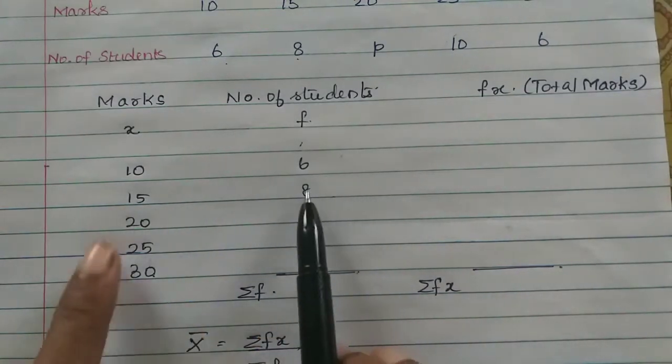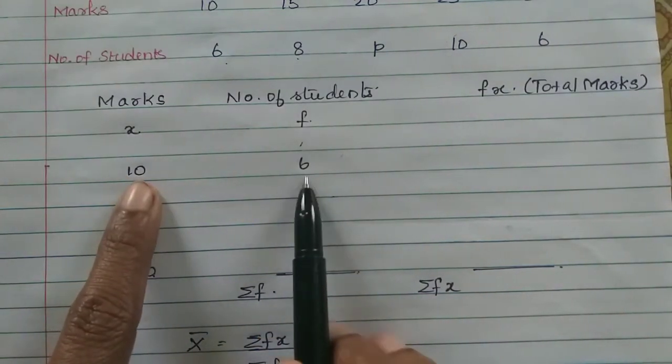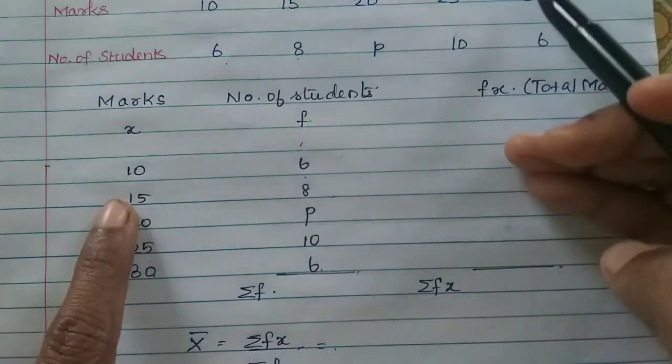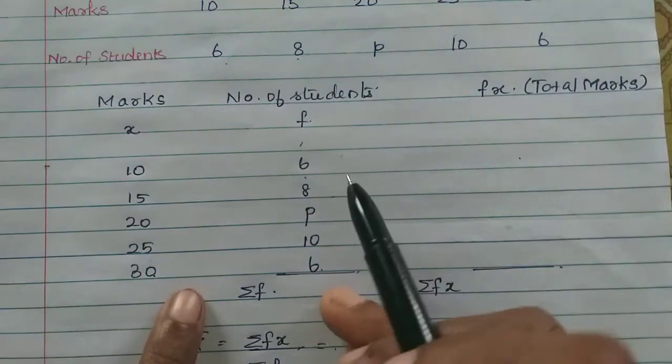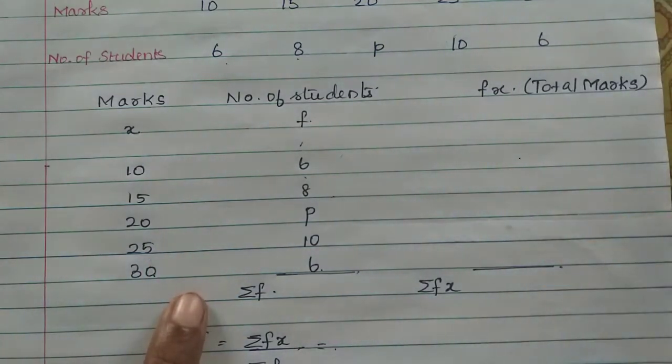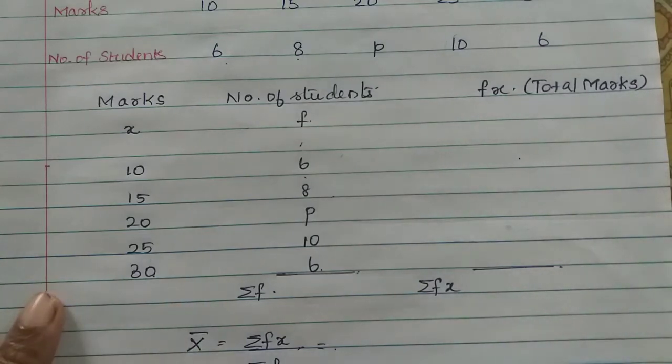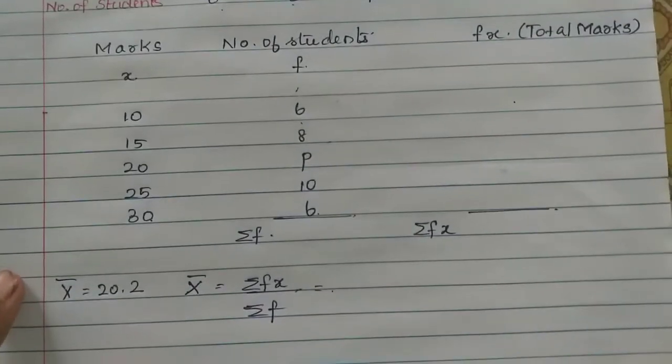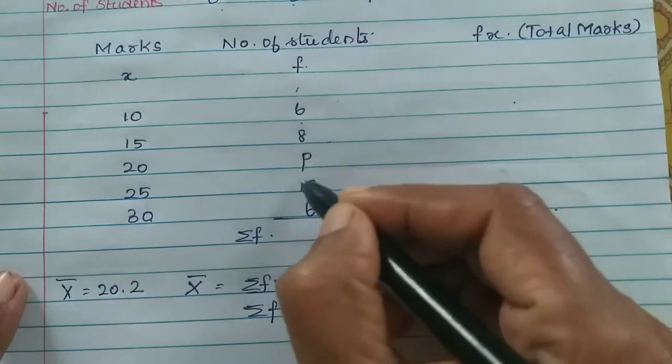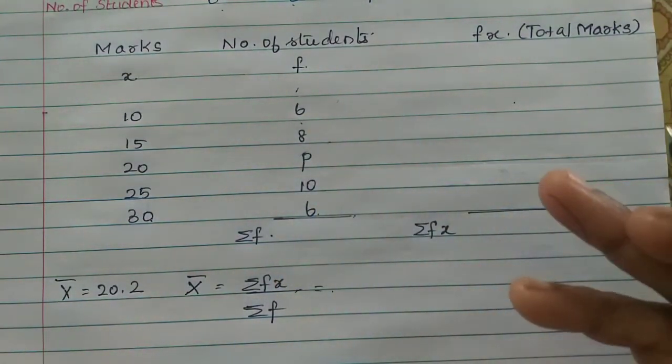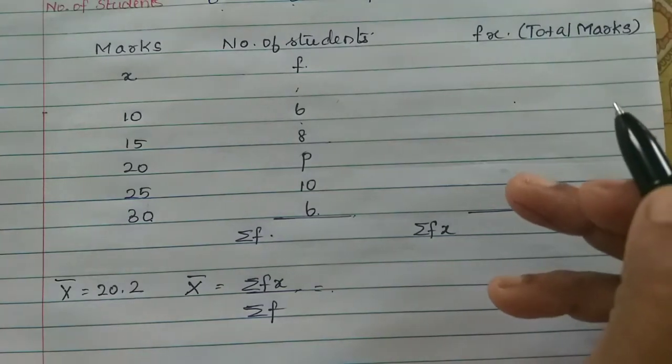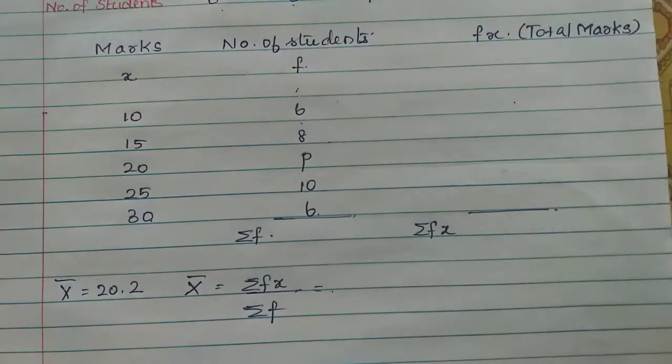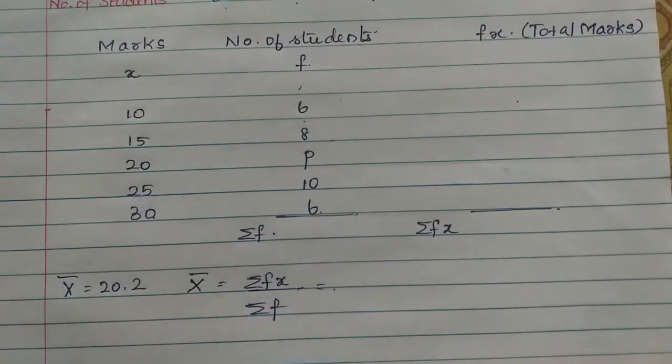If we multiply the marks by the number of students, like one student has 10 marks then 6 students score 60 marks total. If you add these marks in total and divide by the number of students, we get the mean. We know x bar equals 20.2.